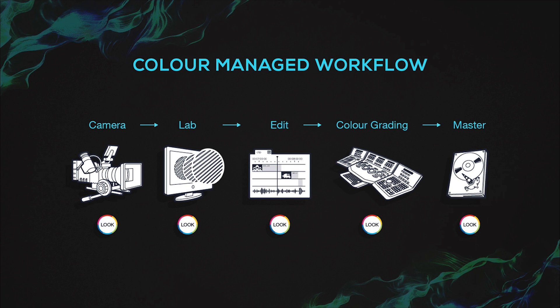This look is created with Cololab, and it has to be created so that it can manage the whole process. That means we have to know exactly what camera it is created for and what the final master we have to create is. Only then can this look be applied in camera on set, then burned into the dailies in a lab during dailies creation, and then during editing the director and editor would already see well-looking and graded dailies.